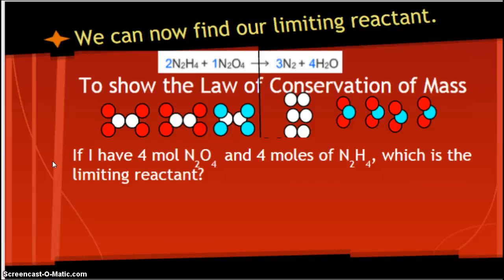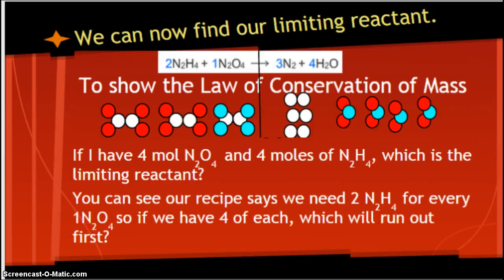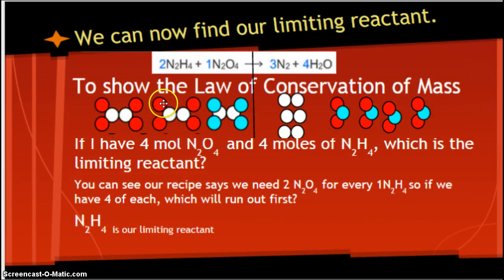Let's do a story problem. If I have 4 moles of N2O4 and 4 moles of N2H4, which is the limiting reactant? This one you might just be able to figure out by looking at it. You can see our recipe, or our chemical equation, says we need 2 N2H4s for every 1 N2O4. So if we have four of each, which will run out first? If I need twice as many of these, the N2H4 is going to run out first. I need two of these, one of those. I use one, two, and one. I use three, four, and I'm only on my second one. So it's going to run out first. Therefore, it's my limiting reactant. And some of them you can just look at the equation and figure out that way.